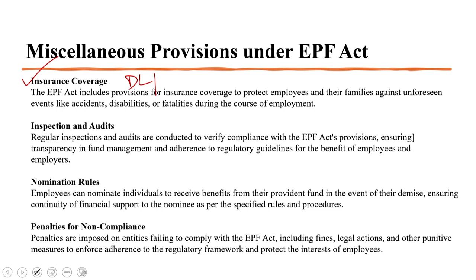When looking at the inspection and audits part, the Act empowers authorities to conduct inspections of establishments covered under the EPF scheme. These inspections verify compliance with the Act's provisions regarding contributions, record keeping, and account management. Regular audits are also conducted to ensure the financial integrity of the scheme — the most important factor when it comes to public funds. The EPF Act mandates that every EPF member nominate a beneficiary to receive the accumulated balance in their account in the event of their death, ensuring the member's family receives the provident fund corpus promptly.